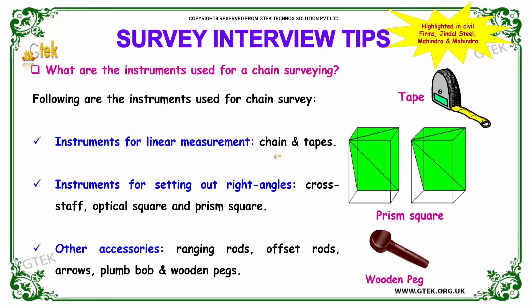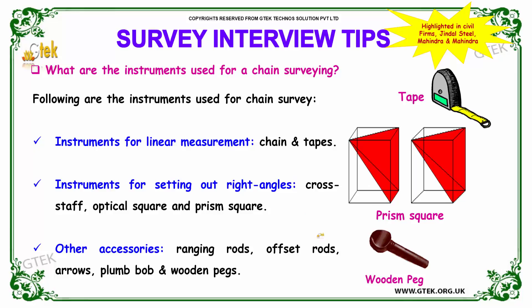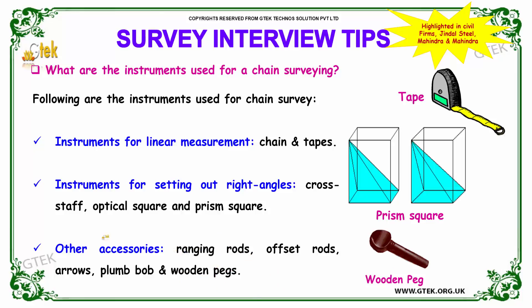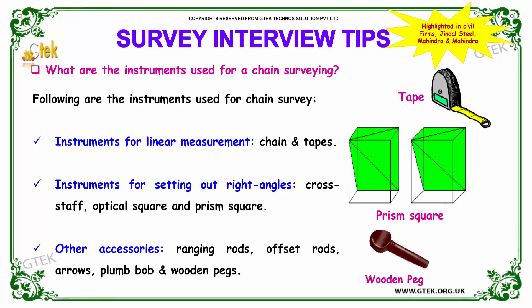The instruments for linear measurement include chain and tapes. The instruments for setting out right angles are cross staff, optical square, and prism square. Other accessories are ranging rods, offset rods, arrows, plumb bob, and wooden pegs. These accessories support chain surveying. These patterns of questions are asked in civil firms such as Jindal Steel and Mahindra and Mahindra.